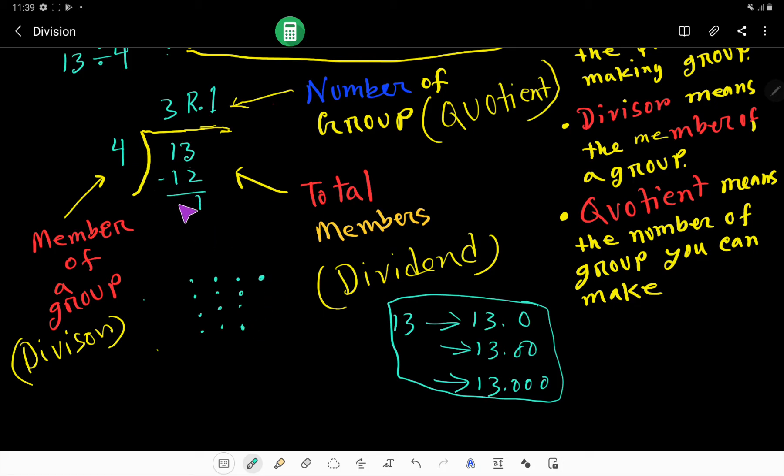If I want to make groups of 4, taking 4 people at a time, we can make 1 group, 2 groups, and 3 groups. For making these 3 groups, we have used 4 plus 4 plus 4, which is 12, and we have 1 left. This is the visualization.